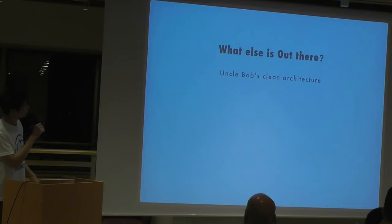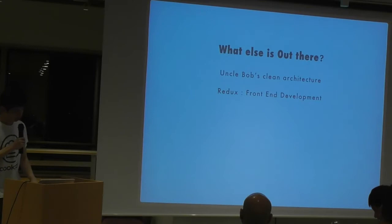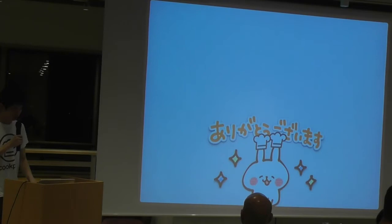What else is out there? If you look up architecture for Android, there's another one called Uncle Bob's Clean Architecture. There's also this Redux thing I just talked about, which comes from front-end development. And there's this Viper thing for iOS which I haven't had time to look into yet. I think the only difference with Viper is that it has a navigator, but I'm not sure because I haven't looked into it fully.